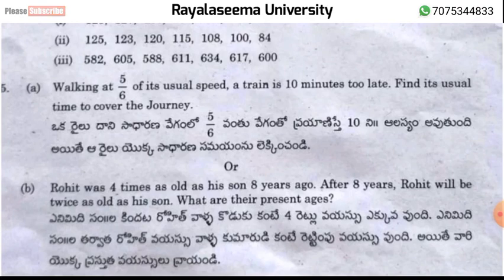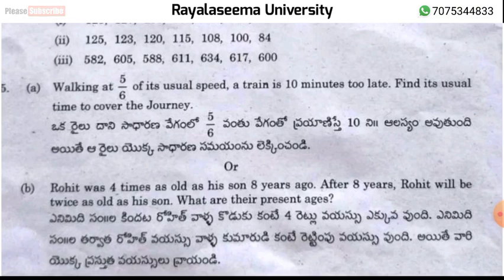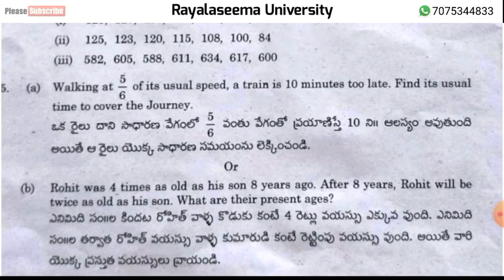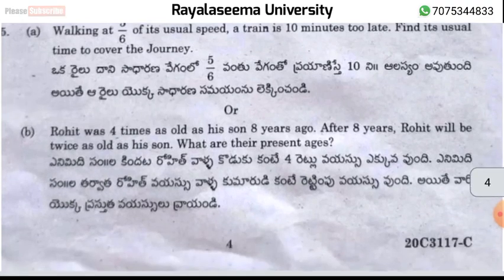Question 15, part B: Rohit was 4 times as old as his son 8 years ago. Setting up the equations: present age of Rohit is 40 years and his son's present age is 16 years. The answer is Rohit is 40 years old.